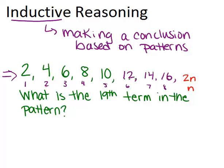1 times 2 is 2, 2 times 2 is 4, 3 times 2 is 6, 4 times 2 is 8, 5 times 2 is 10, etc. So the number that it is in the sequence, if you times that by 2, you'll get the actual value for the number.